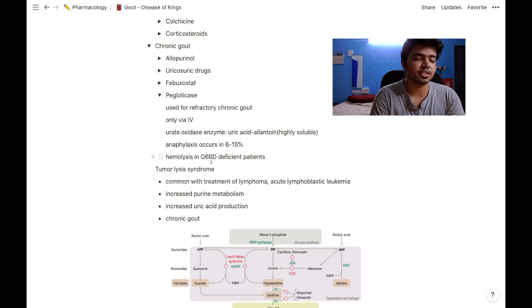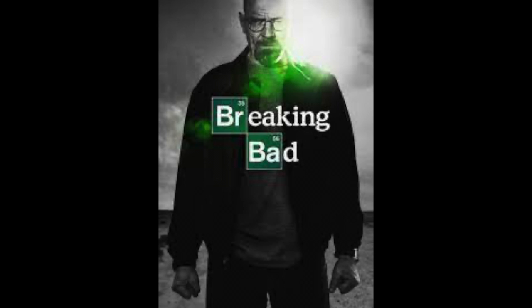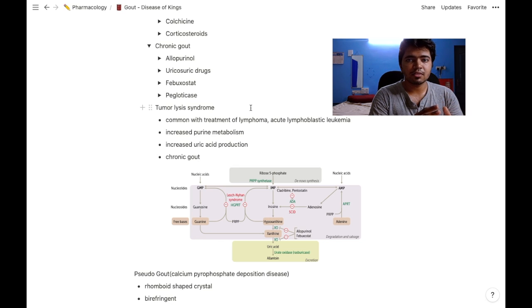Administering pegloticase might cause anaphylaxis, which is observed in 6-15% of patients. It might cause hemolysis in G6PD-deficient patients. In tumor lysis syndrome after chemotherapy, there is a sudden breakdown of cells. The DNAs and purines are metabolized, suddenly increasing the level of uric acid. It is common with treatment of lymphoma and acute lymphoblastic leukemia.